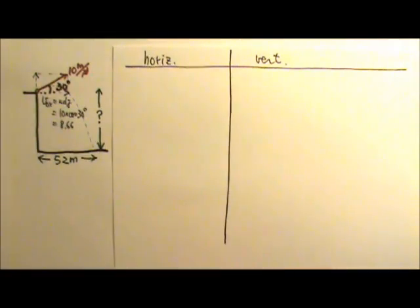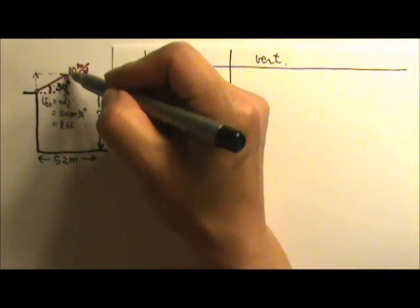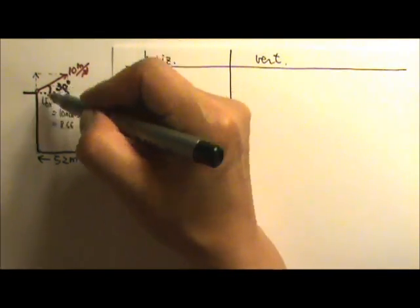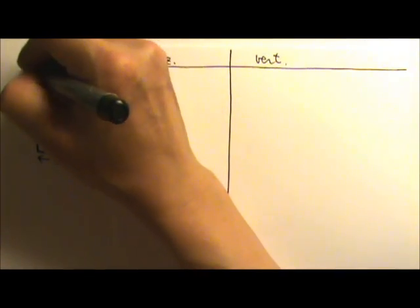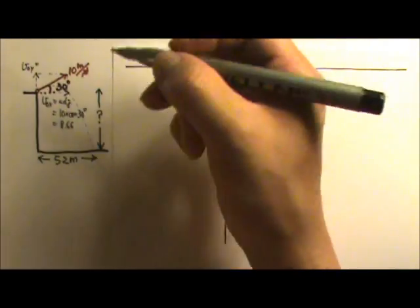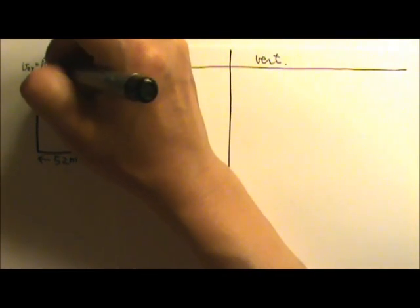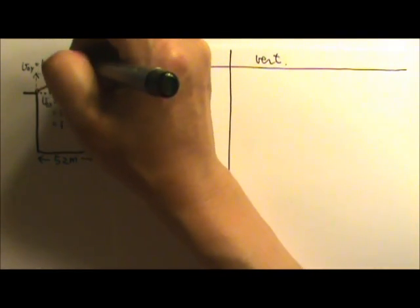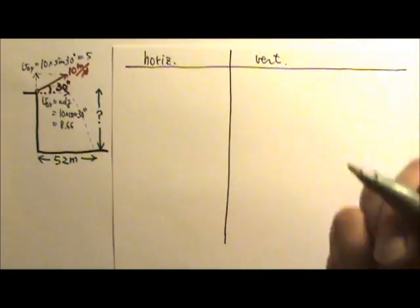The vertical component is the same as the side that's opposite to the angle. So this is the VOY, and that will be the sine component. That's the 10 times the sine 30 degrees, which gives us 5.